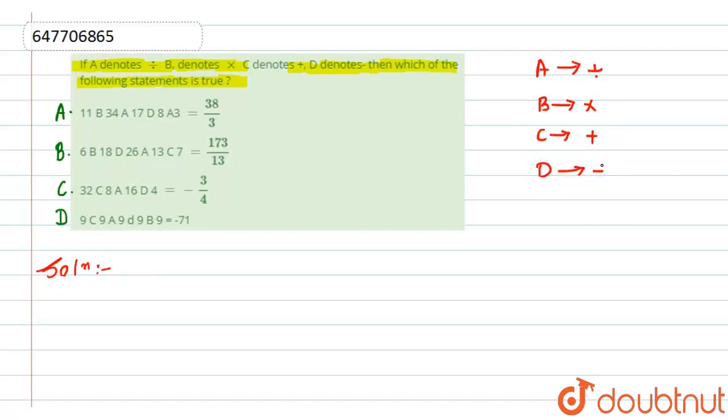So, let us start with the first one, that is for A. If we go here according to this operation, that is L1, B is into 34, A is division, D is 17, D is subtraction, A is again division, and here is 3A. So, this value is how much we can find out. Before that, if you have division, multiplication, plus, minus, if you have any operation given to a statement...